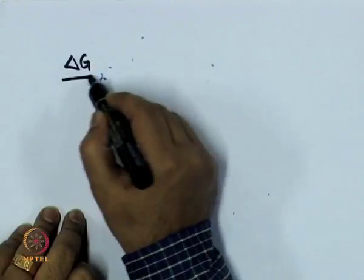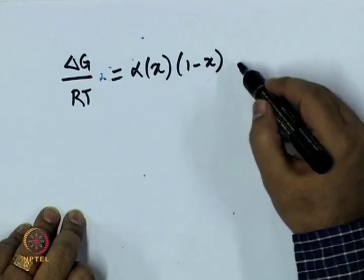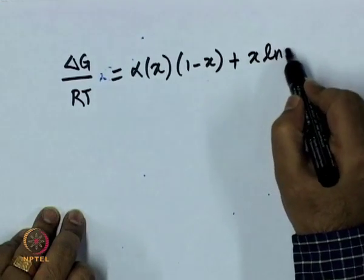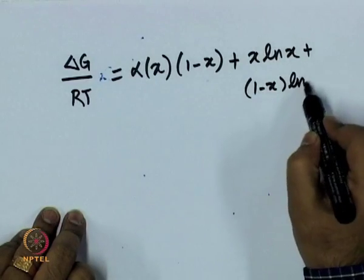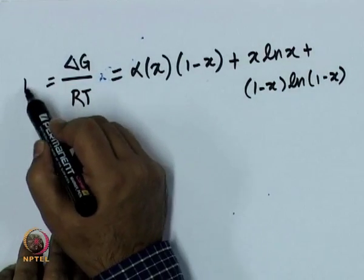To do that we are going to use the same kind of strategy — we are going to define the function which is the second derivative of free energy with respect to composition. This is done for the normalized case, so let us derive that expression. We take delta_g/RT which is alpha*x*(1-x) + x*log(x) + (1-x)*log(1-x). Let me call this as dg.